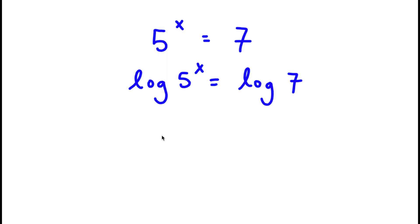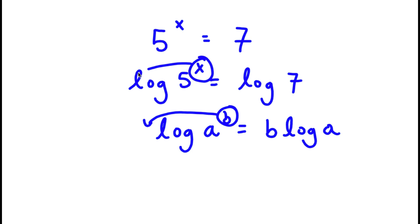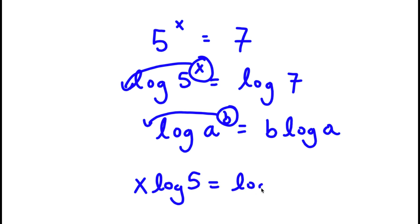Now, if I have something in the form log a to the power of b, I can simply move this exponent b to the front. So this is going to equal b times log a. In this case, I have log 5 to the power of x, so I can move x to the front. Now I have x times log 5 is equal to log 7.